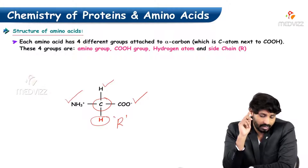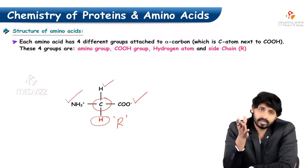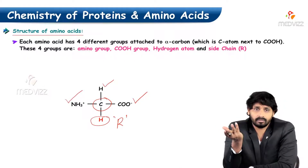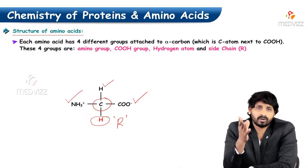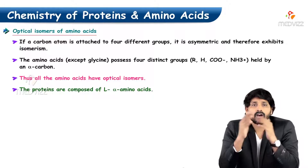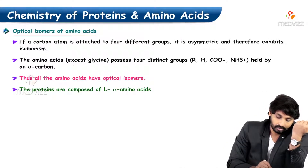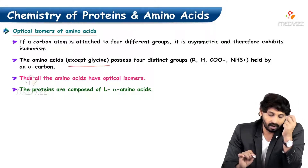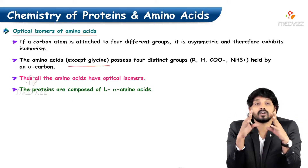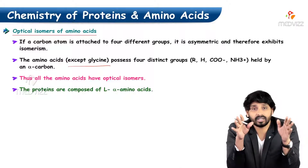For optical isomerism, an asymmetric carbon is required. Only one amino acid lacks an asymmetric carbon — that is glycine — making it optically inactive. In MCQ or competitive exams, if asked to name the optically inactive amino acid, the answer is glycine, because it carries two similar hydrogen atoms rather than four different groups. All other amino acids are optical isomers.